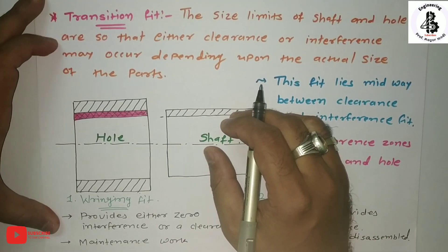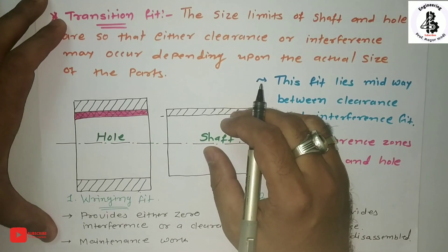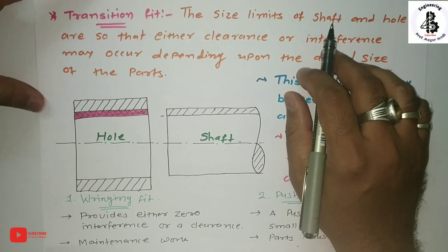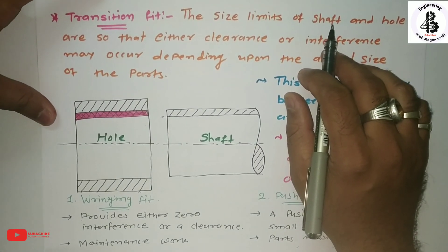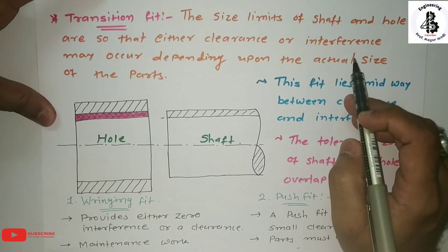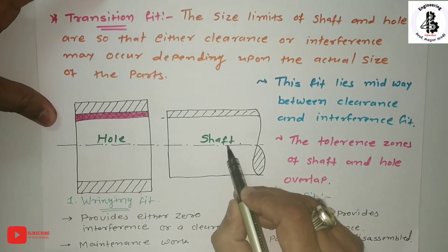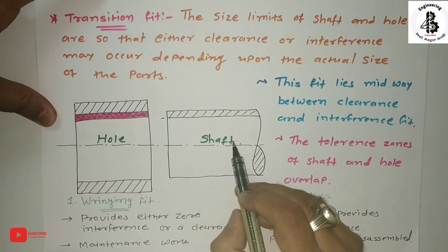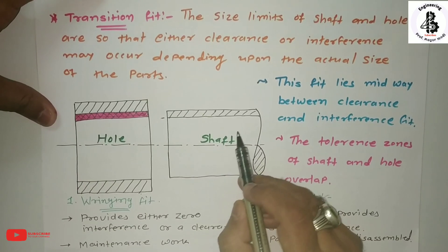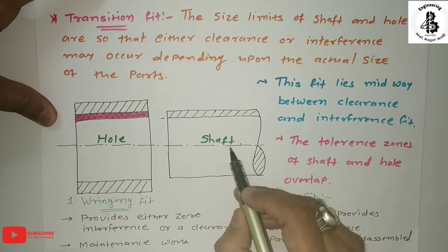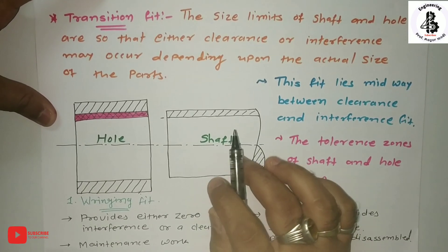Now let's concentrate on the transition fit and how it differs from the other fits. You can see the size limits of the shaft and hole are such that either clearance or interference may occur, depending upon the actual size of the parts.